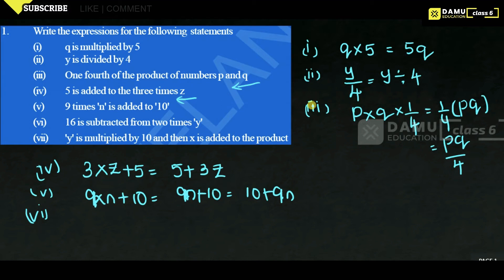The sixth statement is: 16 is subtracted from 2 times of y. 2 times of y means 2y, and then 16 is subtracted from it, giving 2y minus 16.